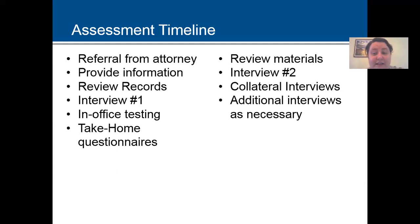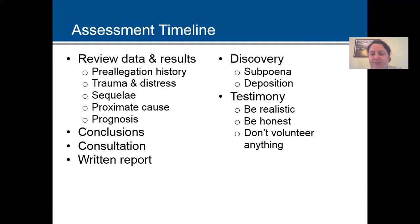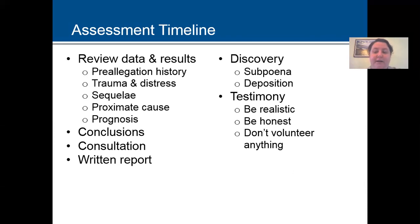You conduct collateral interviews, do additional interviews with the plaintiff as necessary, and then review your data and results. You want to organize findings in the following way: pre-allegation history, strengths and competencies, pre-existing vulnerabilities, pre-existing impairments in functioning, and then trauma and distress — what was the plaintiff exposed to?